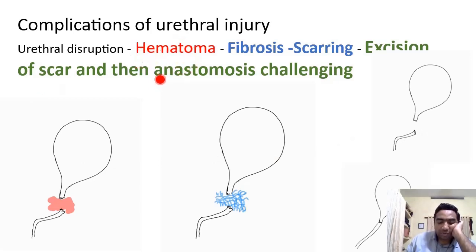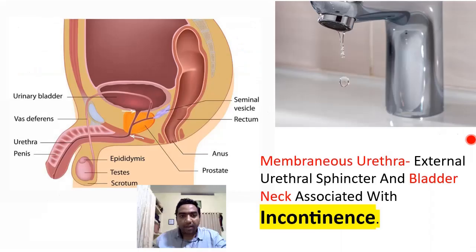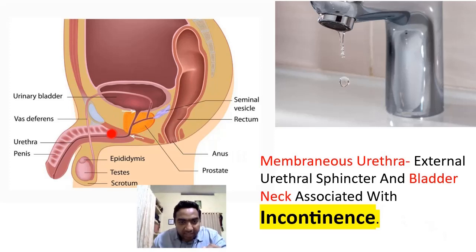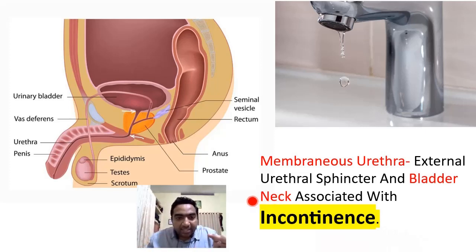Is urethral repair simple? No — due to urethral disruption there will be hematoma formation and fibrosis/scarring. We must excise the scar first and then repair the urethra — excision of the scar and anastomosis is a challenging process. Another complication is incontinence, which especially happens when the membranous urethra is injured, because the external urethral sphincter is located in the membranous urethra. Bladder neck injury can also cause incontinence.